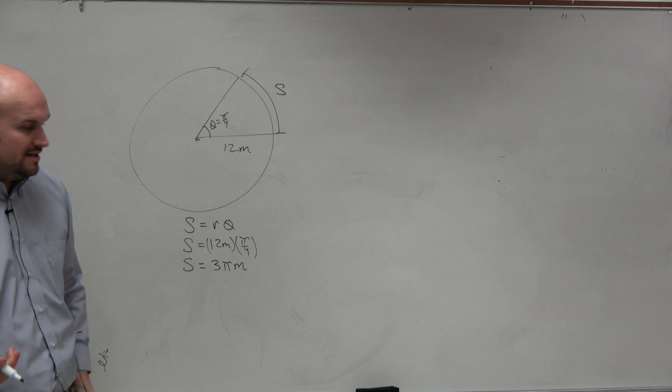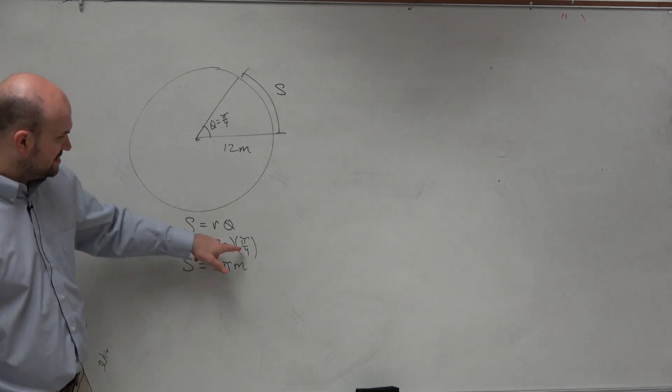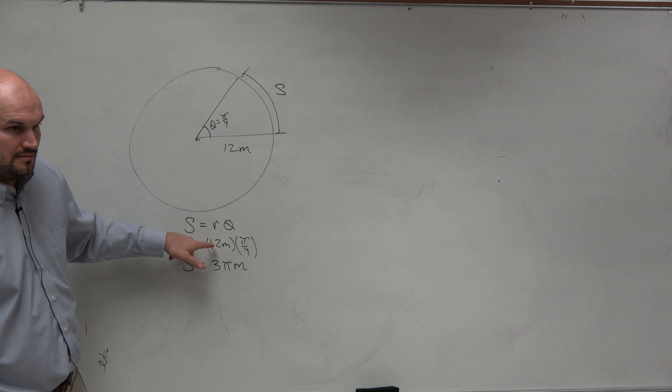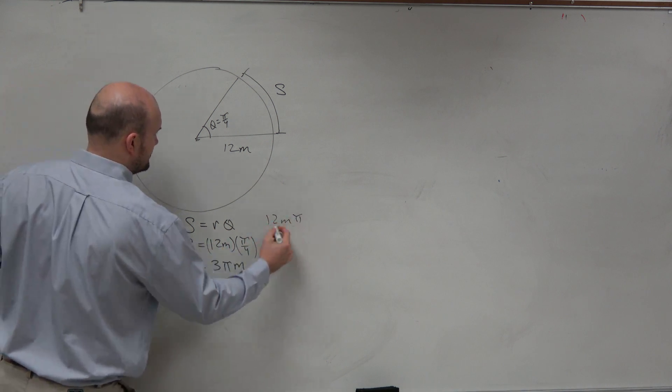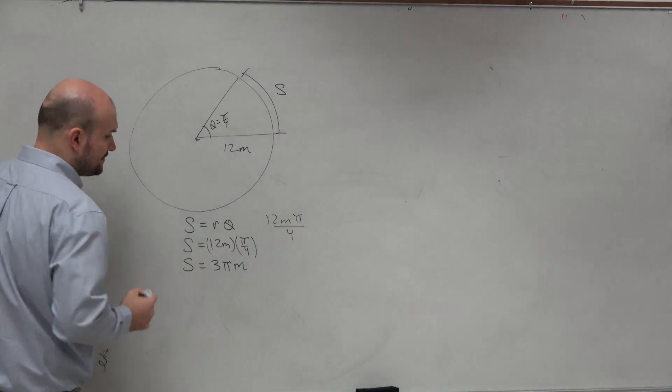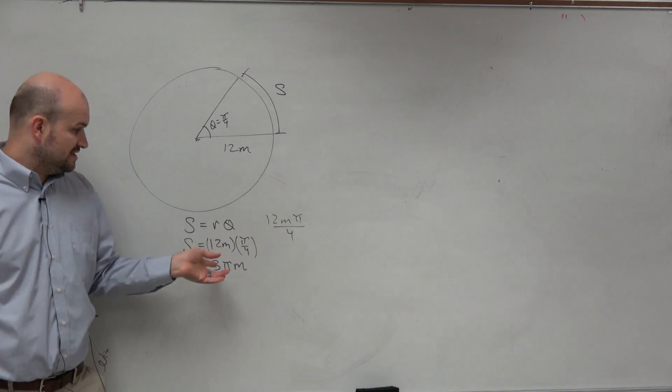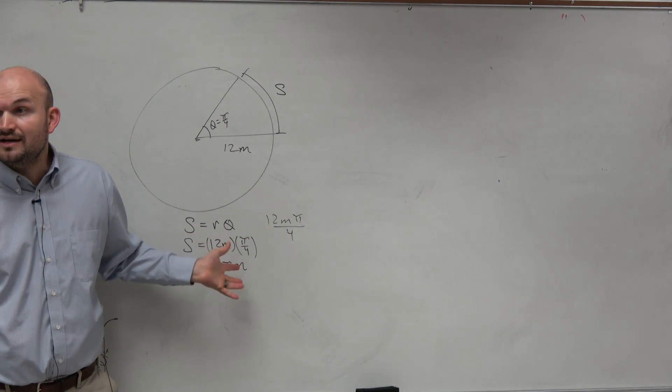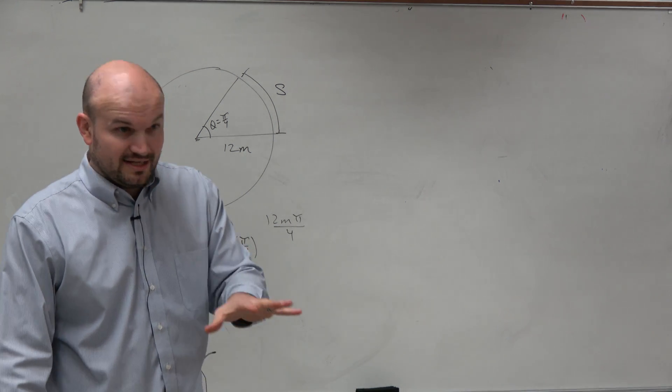Now, we know that pi is roughly—12 divided by 4 is 3. Why are you dividing it? Well, because that's in the denominator, that's in the numerator. So you could just rewrite it as 12 meters pi over 4. 4 divides into 12 three times, right? So 3 times 3.14159, so this is roughly like 9.14159 meters. So that is it in radians.